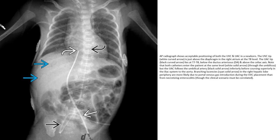AP radiograph showing acceptable positioning of both UVC and UAC. The UVC tip is just above the right atrium at the T8 level. The UAC tip is at T7-T8, below the ductus arteriosus and above the celiac axis. Note that both catheters enter at the umbilicus, but the UAC follows the umbilical artery inferiorly before turning superiorly into the aortic system.